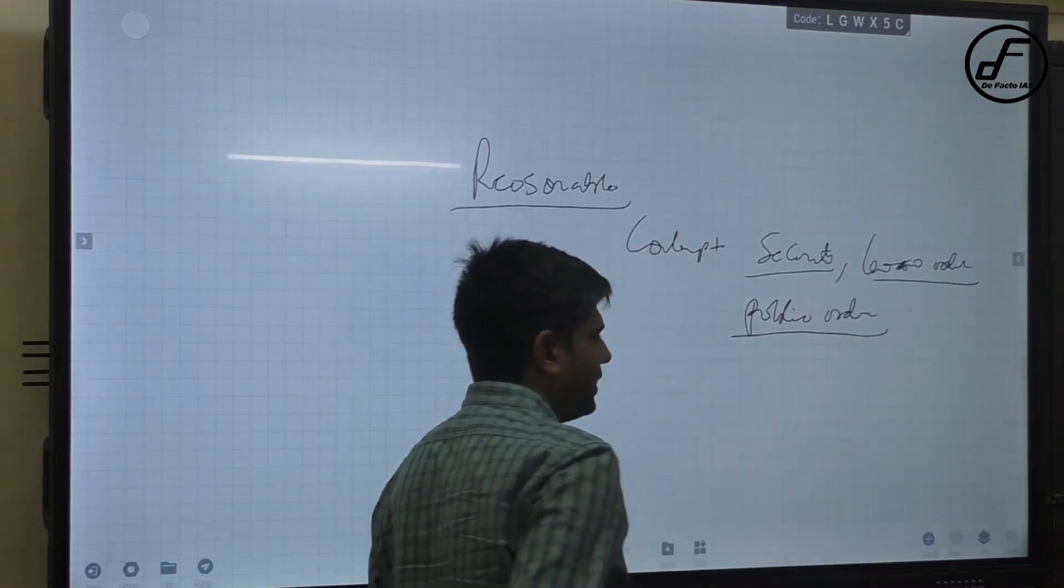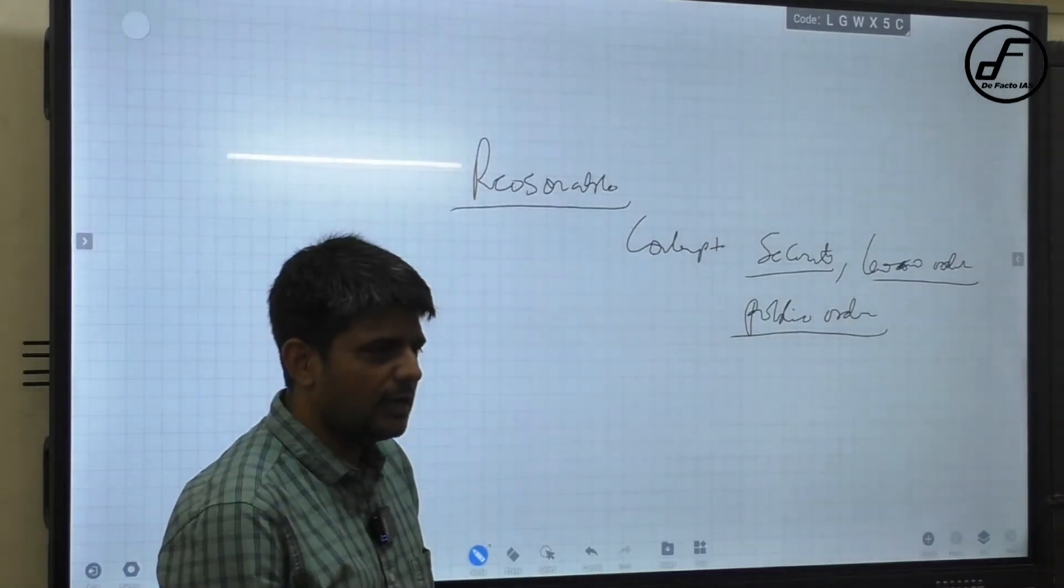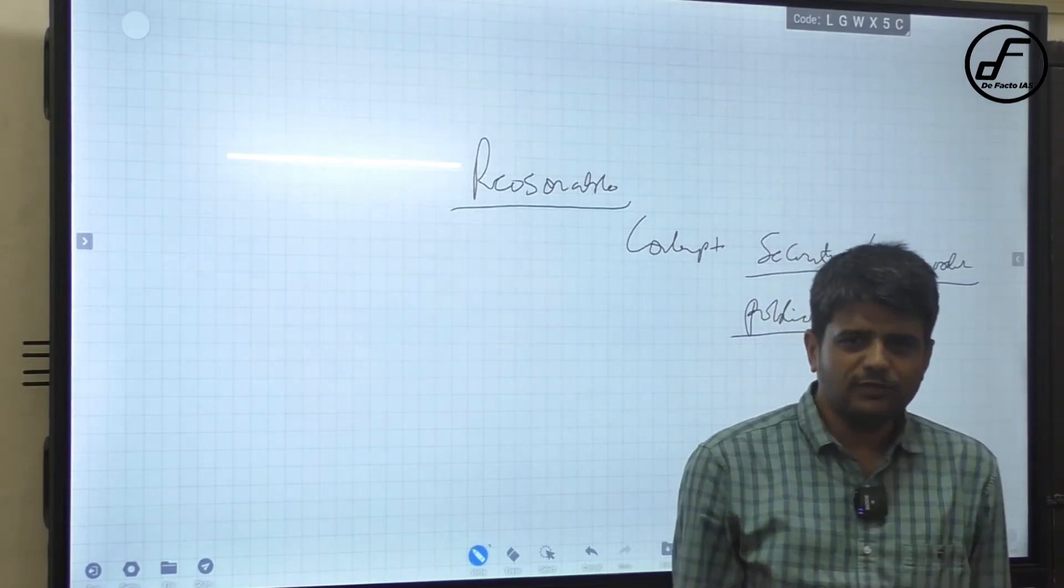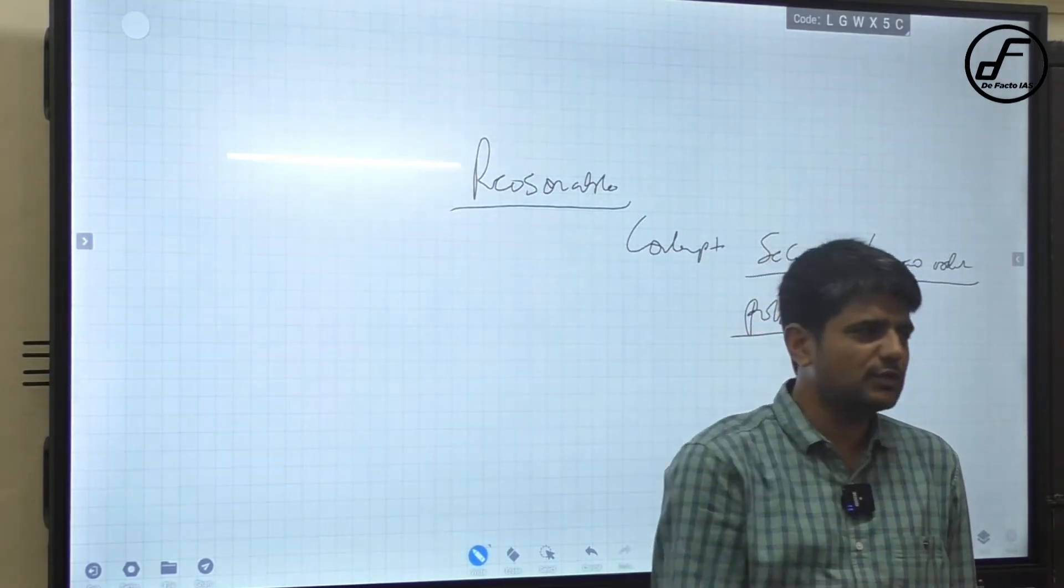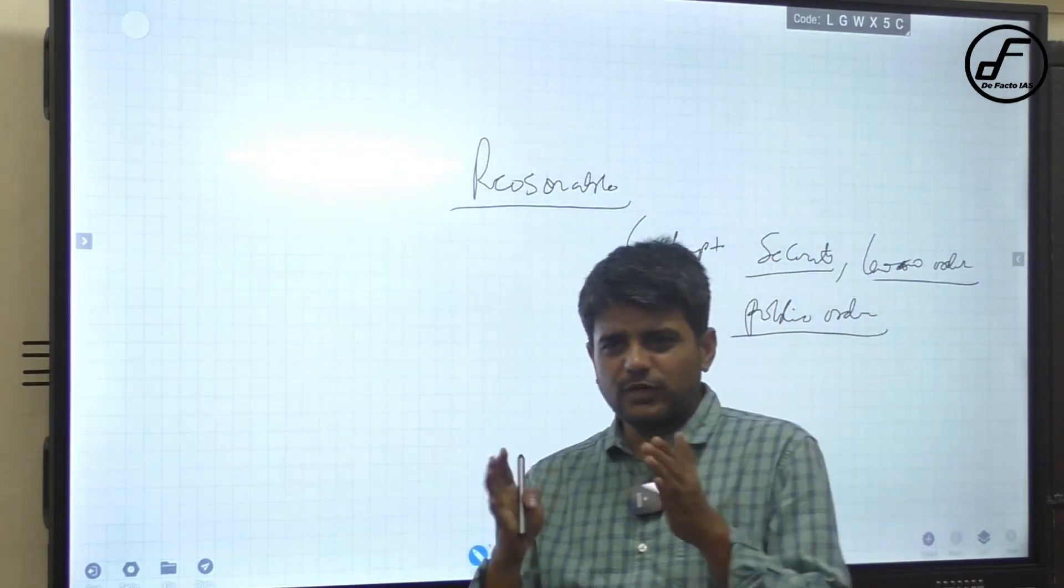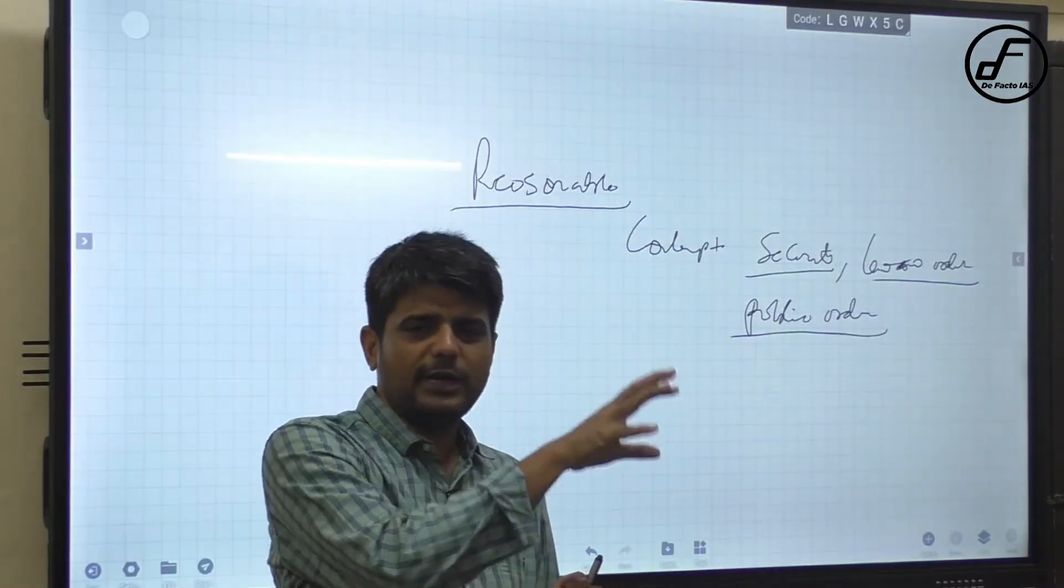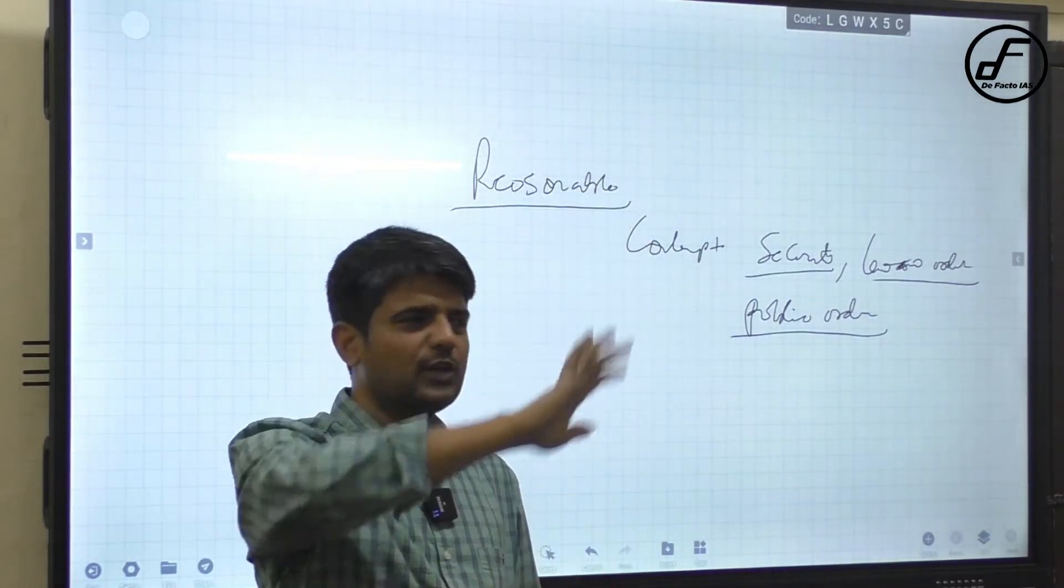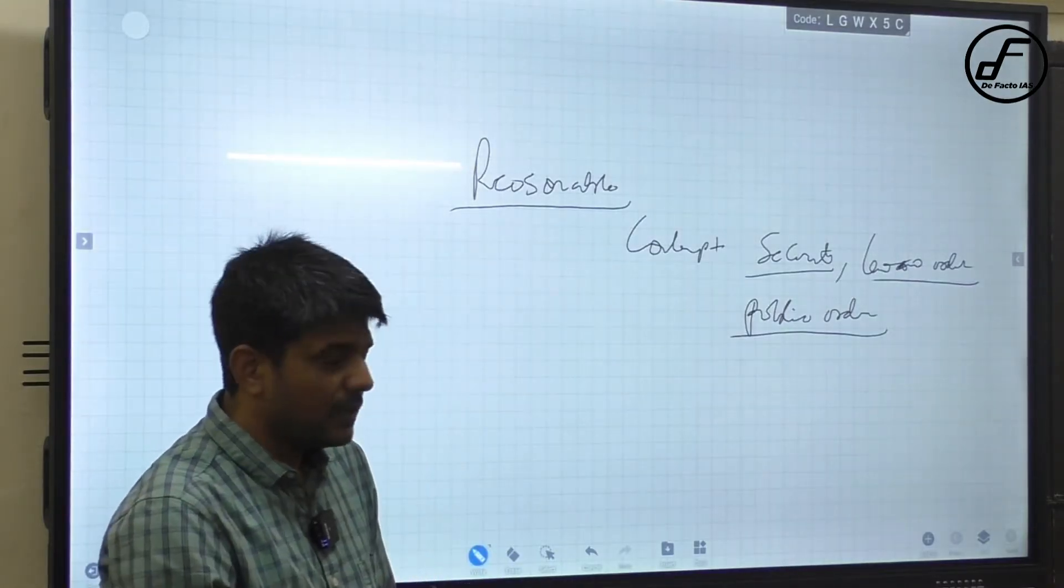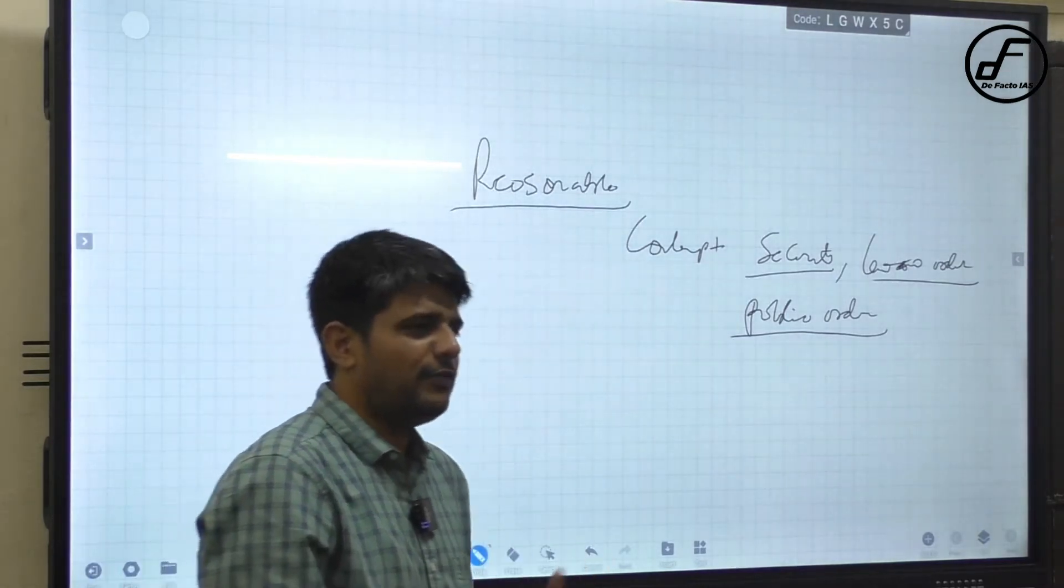Let me explain the difference between security of the state, law and order, and public order. When you look at the constitution, it is the public order and security of the state which are there as grounds for reasonable restrictions. Law and order is absent from the constitution with regard to reasonable restrictions.